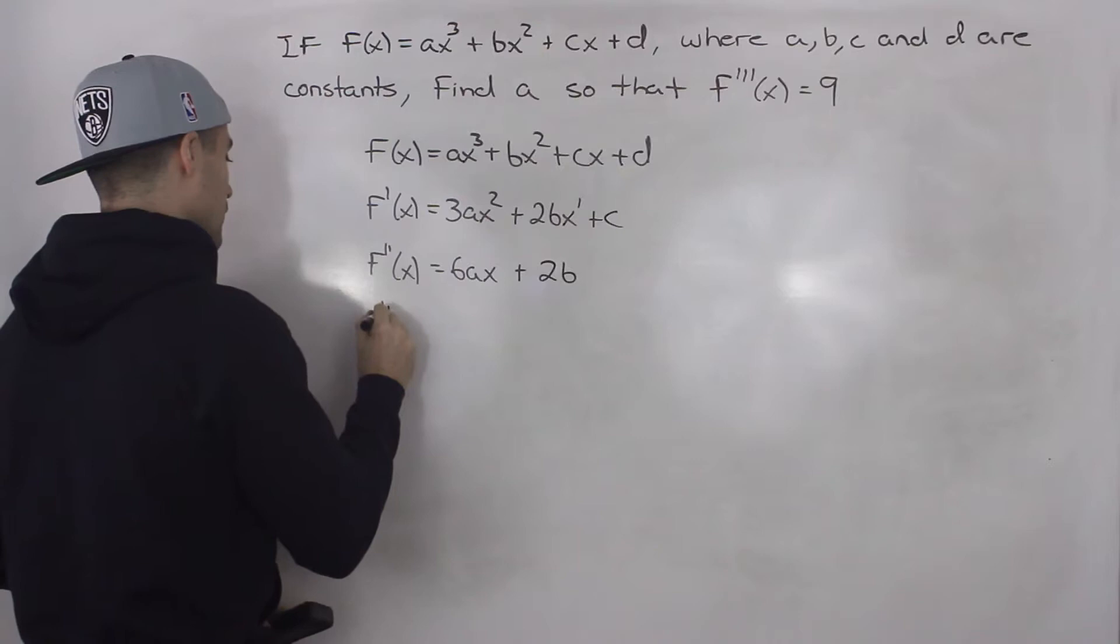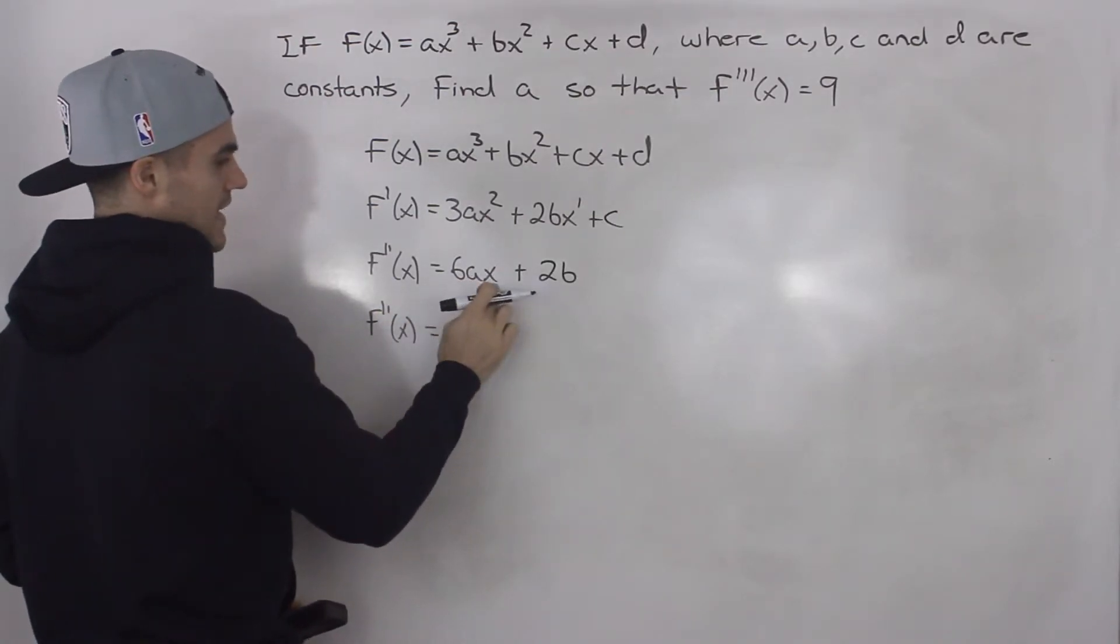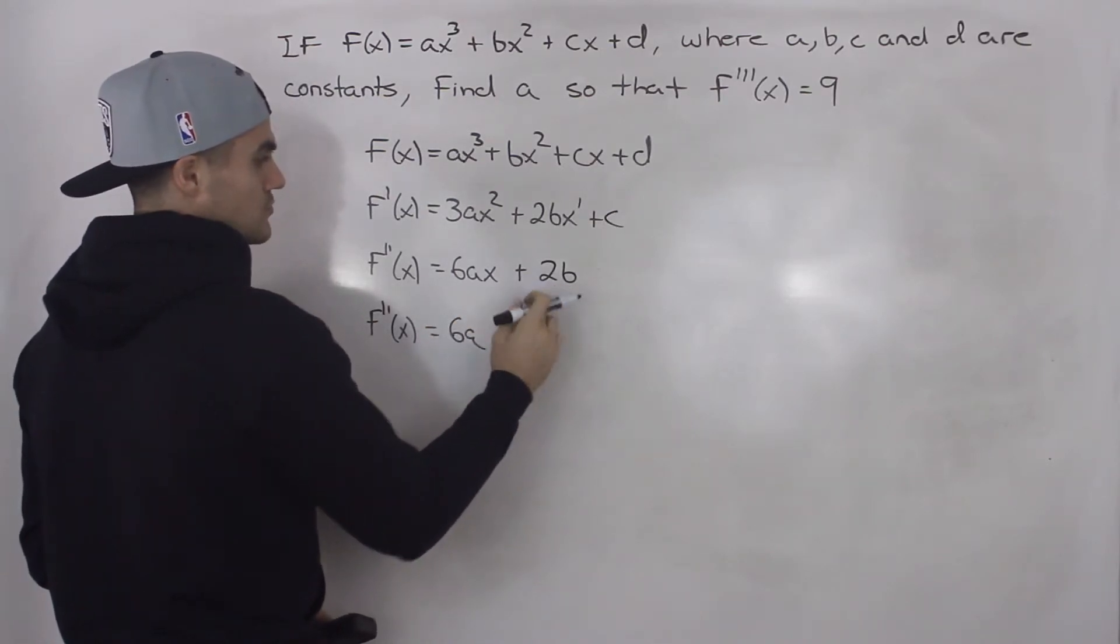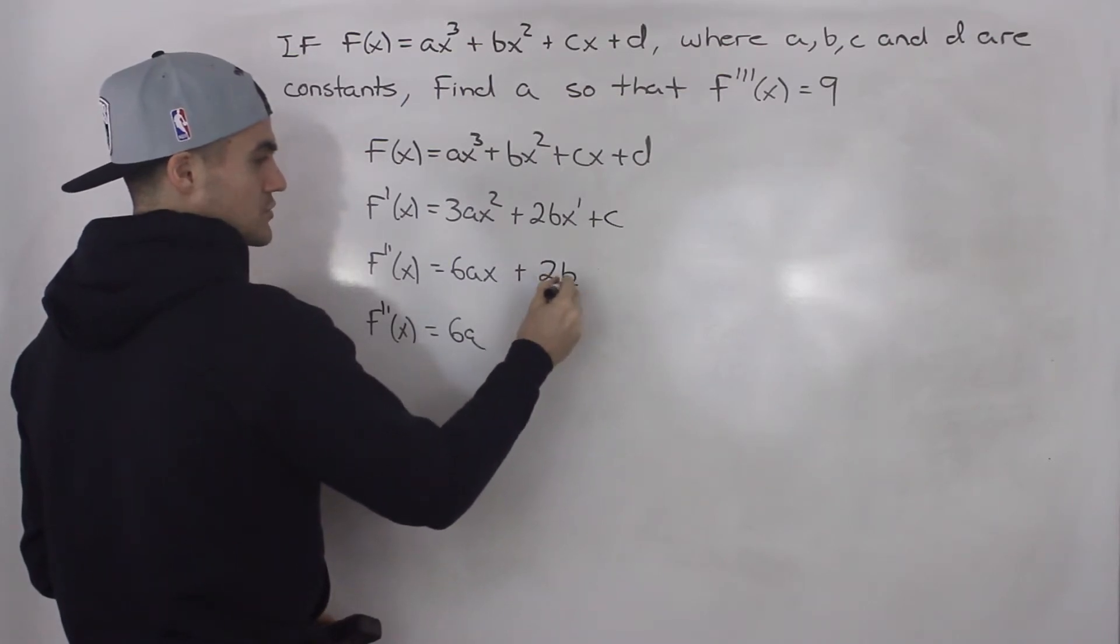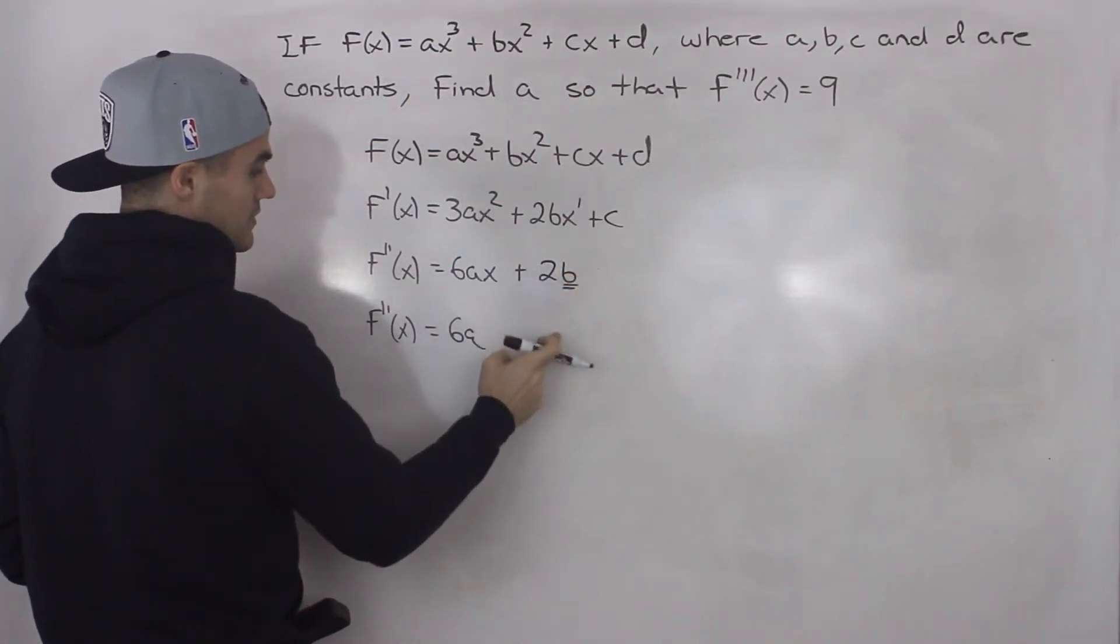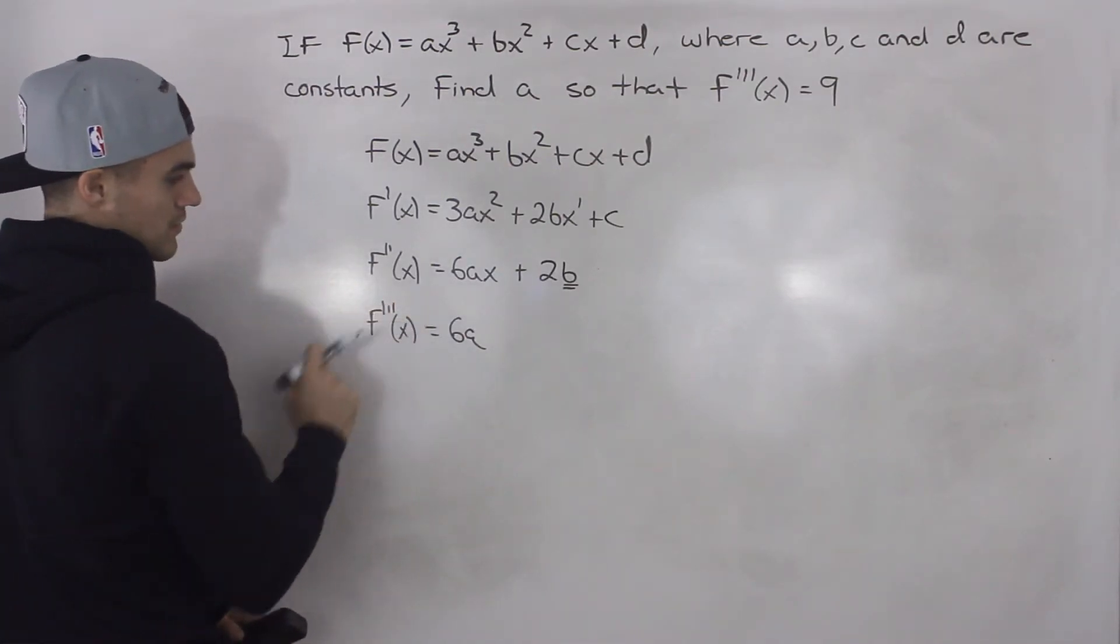And then finally, the third derivative. The derivative of 6ax is just going to be 6a, and then the derivative of 2b is just 0. Because remember, b is a constant, so 2 times a constant is just another constant, and the derivative of a constant is just 0. So this here, sorry, this should be the third derivative.